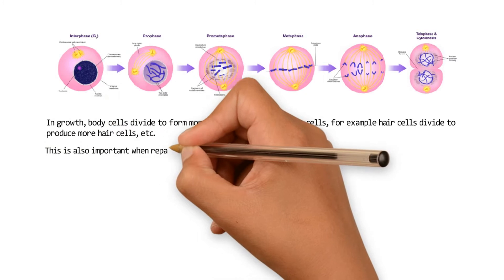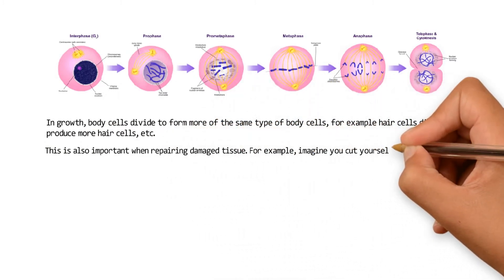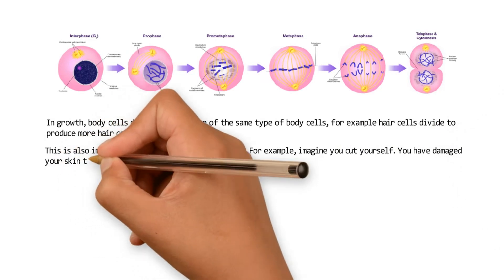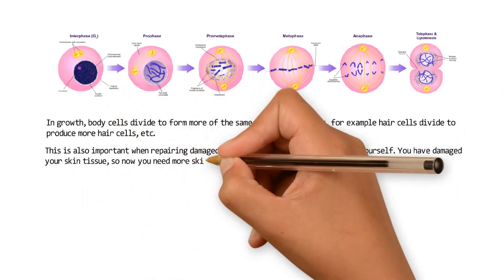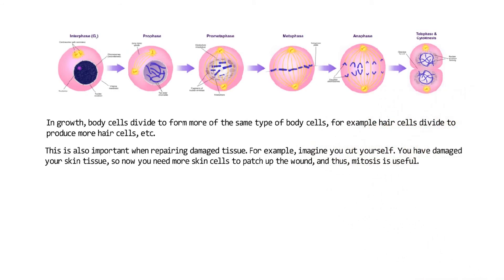This is also important when repairing damaged tissue. For example, imagine you cut yourself. You have damaged your skin tissue, so now you need more skin cells to patch up the wound and thus mitosis is useful.